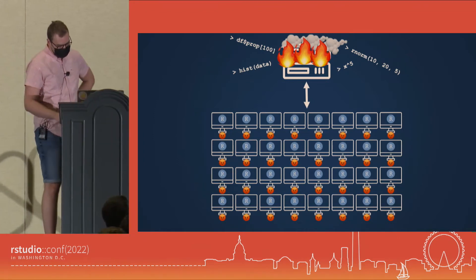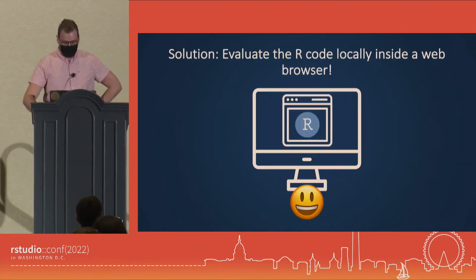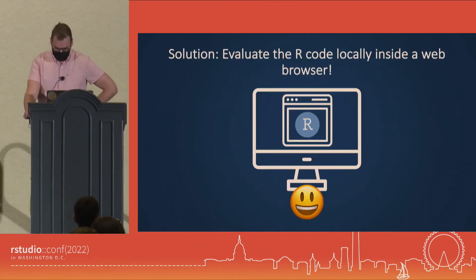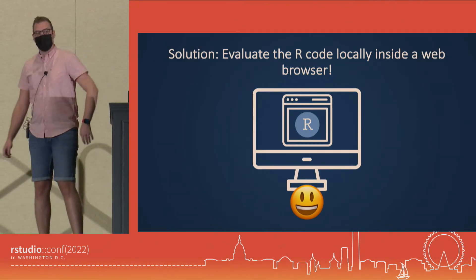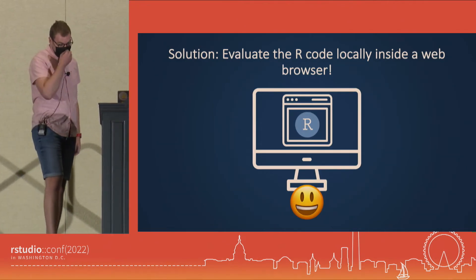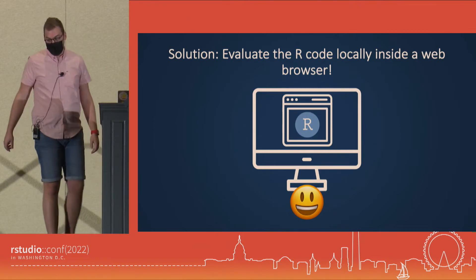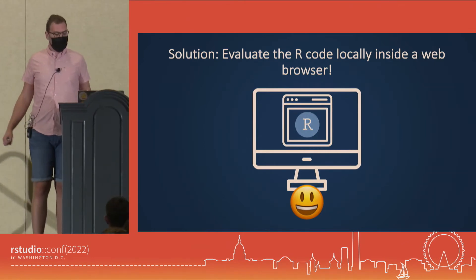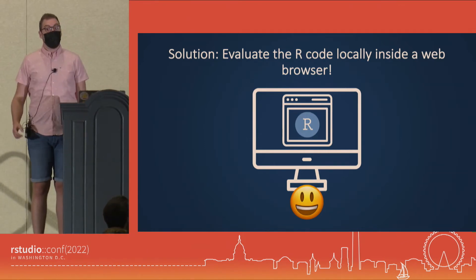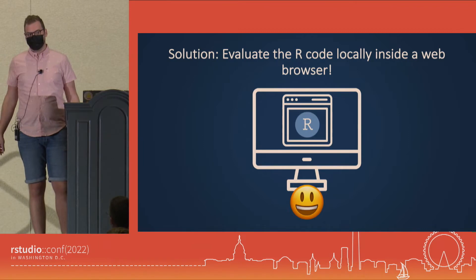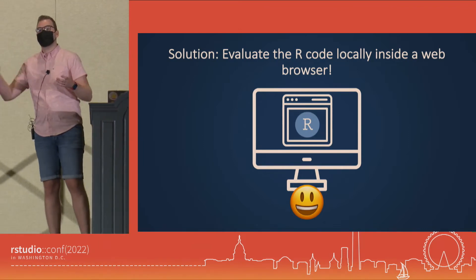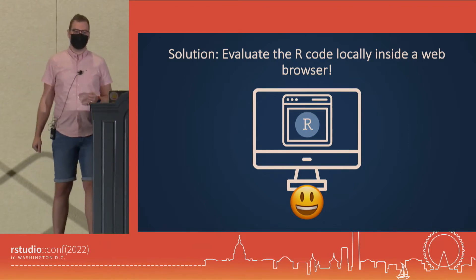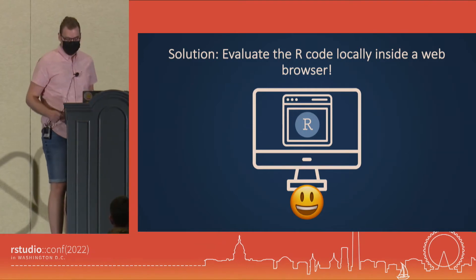That was not ideal, and this was just before the Christmas break, so I went away over Christmas and thought: what can I do to solve this? One of the ideas I had was to instead evaluate that R code locally inside the web browser instead of using a server. This makes sense because it means you're dividing the load over lots of different machines instead of depending on that one machine.